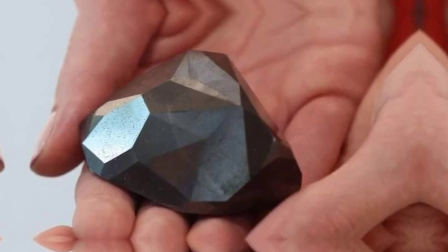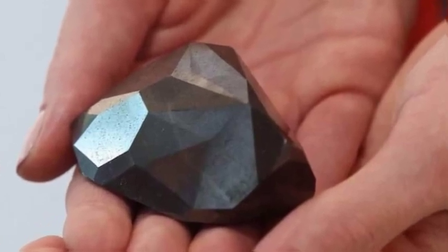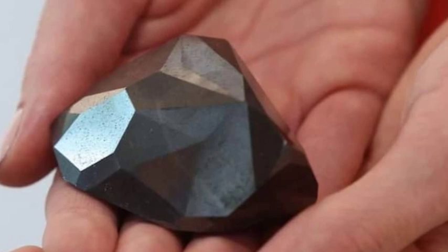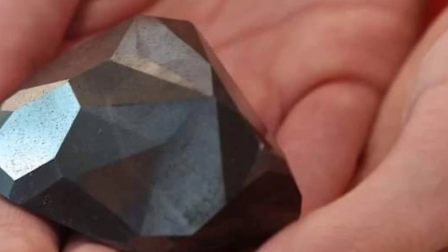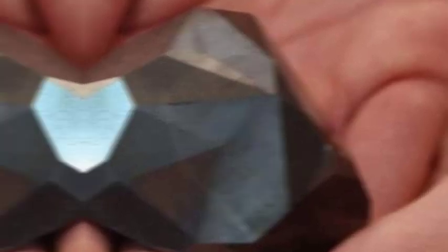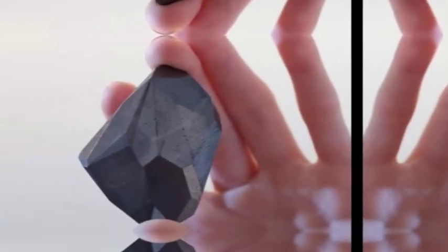It is of the carbonado type, which is one of the strongest forms of natural diamond. There are different theories about the origin of this diamond, one of which says that it was transported to Earth from space by an asteroid.